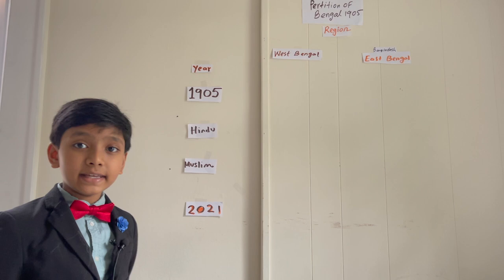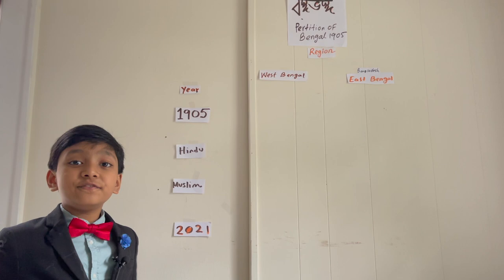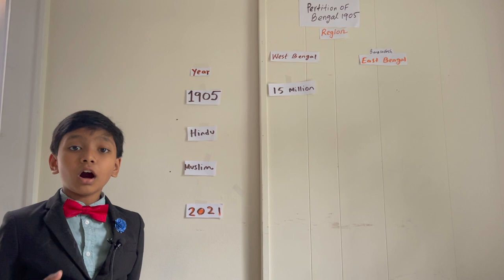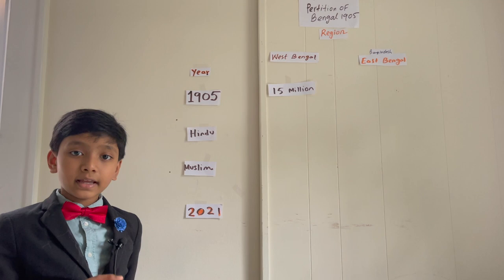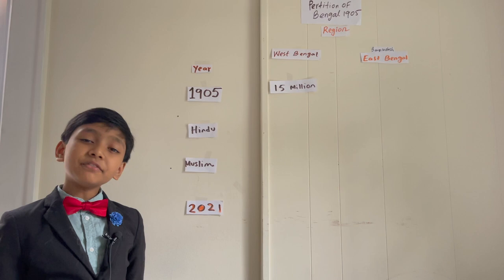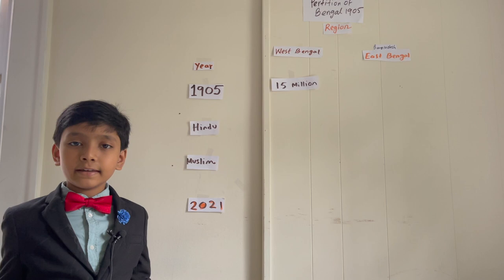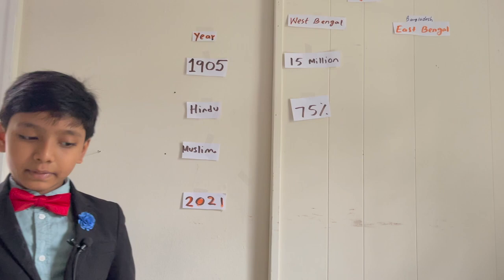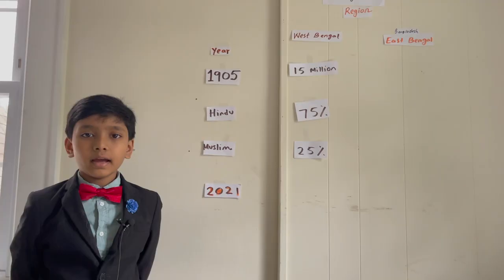The answer to that question would be 15 million. Now, what is the percentage of the West Bengali population which is Hindu? The answer would be 75 percent. And what was the Muslim population of West Bengal? The answer would be 25 percent.